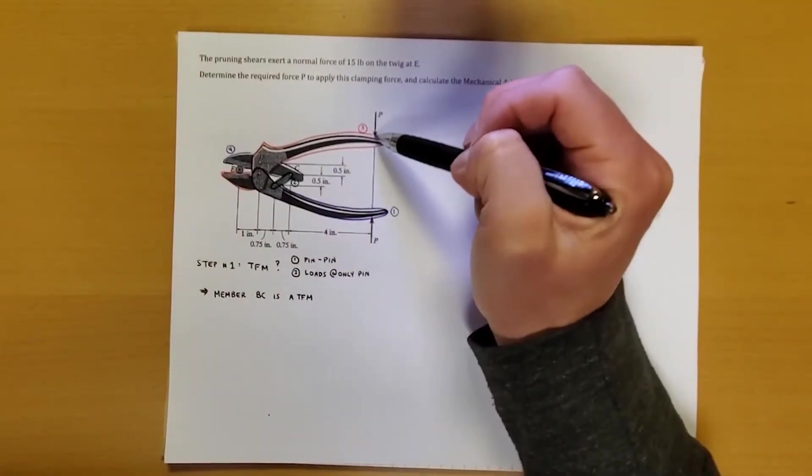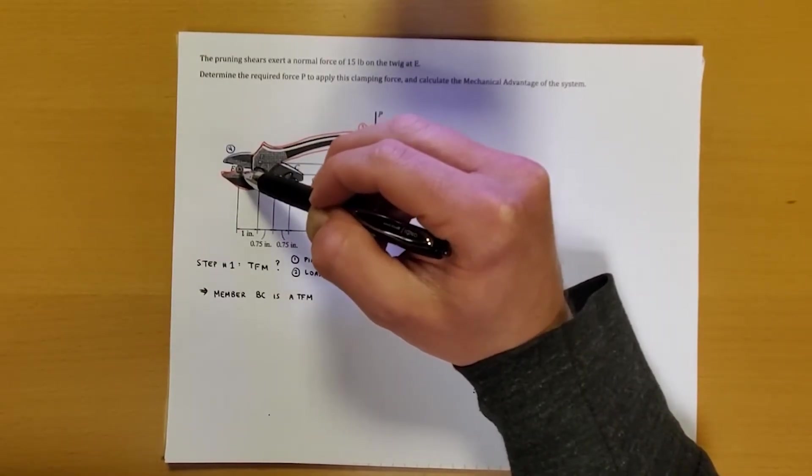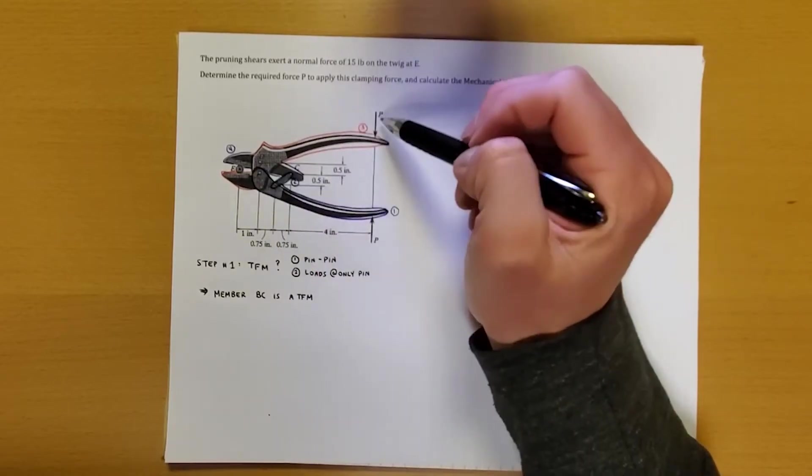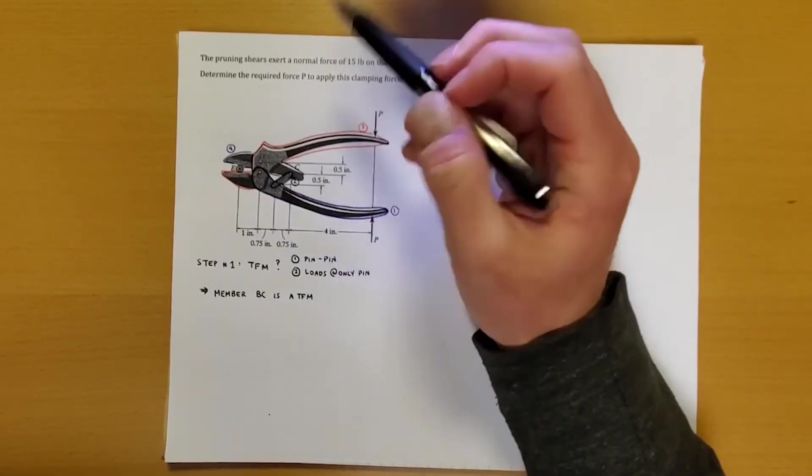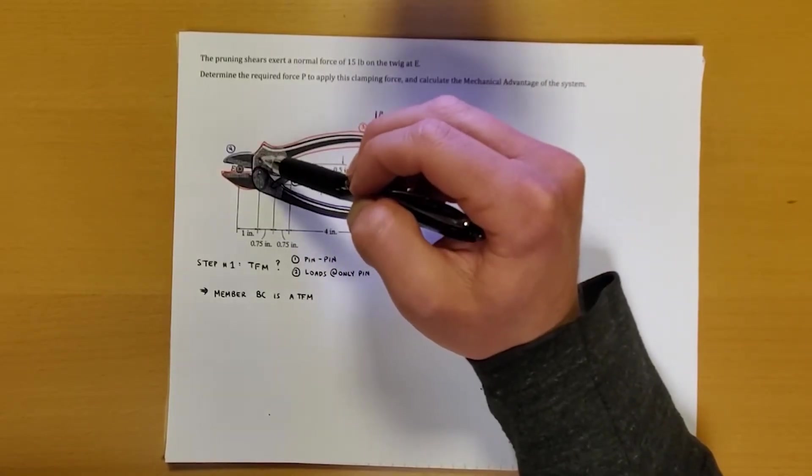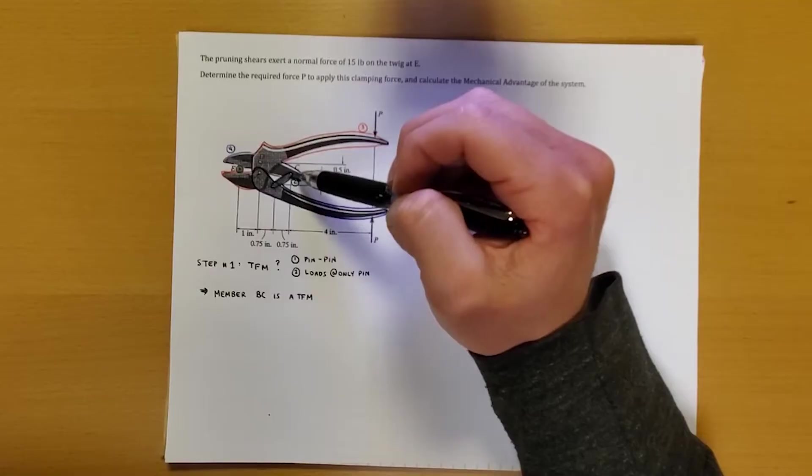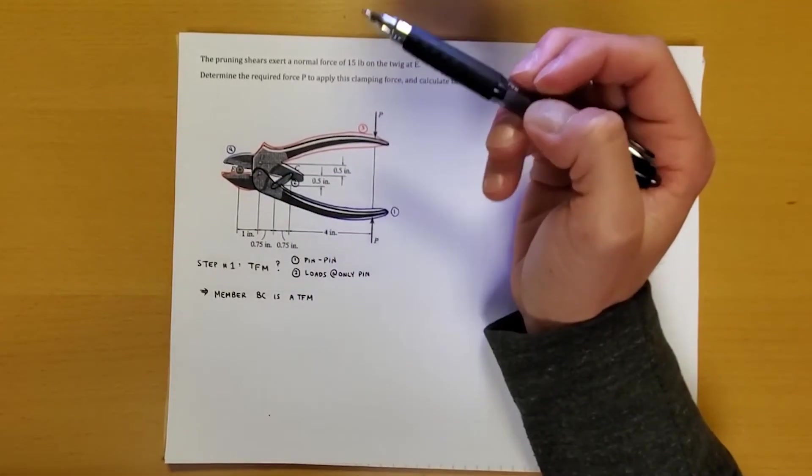Piece three. We've got A and D are the two pins holding this piece together, but we've got an external normal force where the twig is at, and we've got a force over here, P. So that's out of the question. That violates the second thing. And if we look at the top piece right here, we've got pin D and pin C. So it's pin-pin, but got the twig. So that's out of the question.